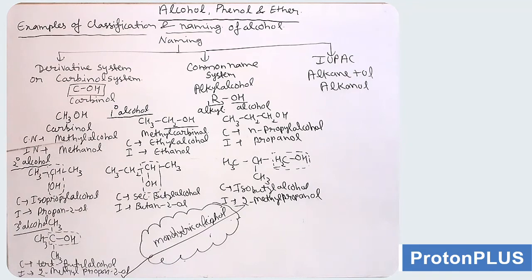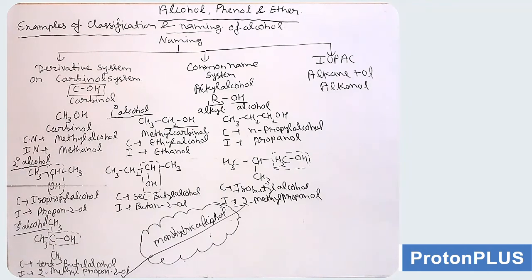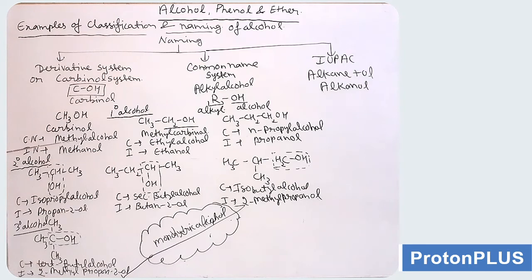One more example: isobutyl alcohol. In isobutyl alcohol, the isobutyl group — as you can see — the alcoholic carbon atom is directly bonded to only one carbon. So it is a primary or one-degree alcohol. For IUPAC, we will select the longest chain; numbering will start from the OH group following the minimum locant rule. So the IUPAC name is 2-methylpropan-1-ol.